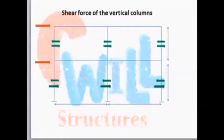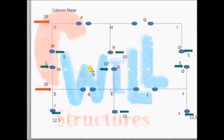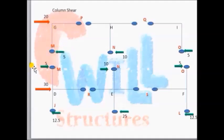Here I'm showing the column shear for the complete frame with directions. At a hinge, the shear has the same magnitude but opposite direction for the respective joints. For example, the 5 kN shear for column GD is right to left when considering joint G, and left to right when considering joint D.